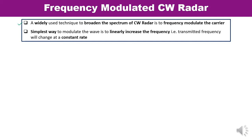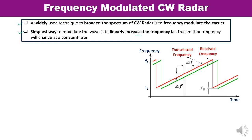The simplest way to modulate the wave in FMCW radar is to linearly increase the frequency, meaning the transmitted frequency changes at a constant rate. In the waveform diagram, the x-axis represents time and the y-axis represents frequency. F1 is the minimum frequency and F2 is the maximum frequency. The red line represents the transmitted frequency and the green line represents the received frequency. Delta F is the difference between the transmitted and received frequencies, and delta T is the time difference.